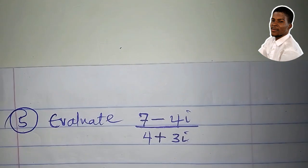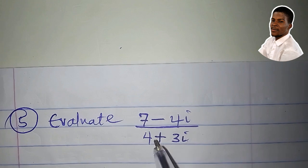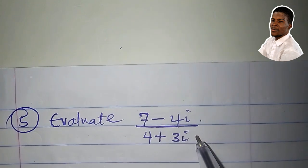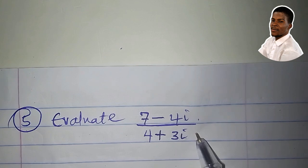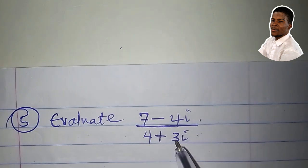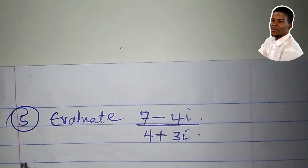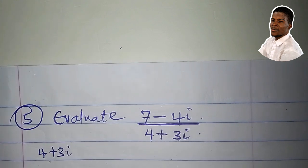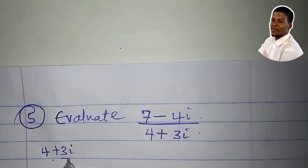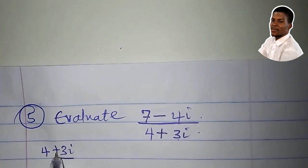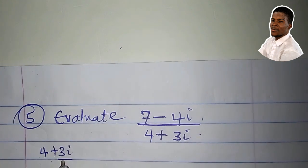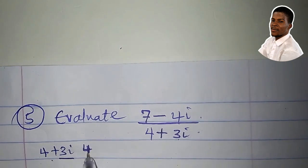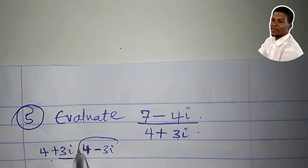It's just the same principle that we use to rationalize the denominator of a surd. I will multiply both numerator and denominator by the conjugate of the denominator. The denominator here is 4 plus 3i. The conjugate is obtained by changing the sign of the imaginary part. So the conjugate of this complex number is 4 minus 3i.